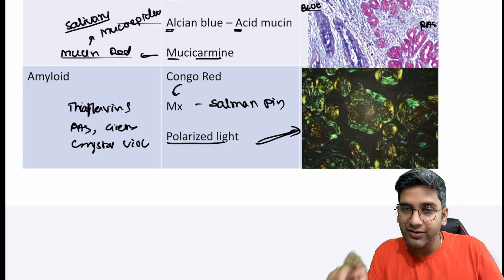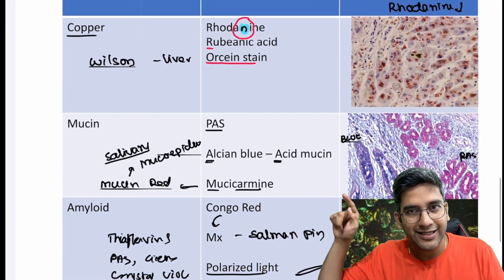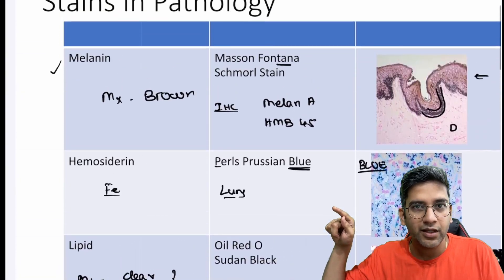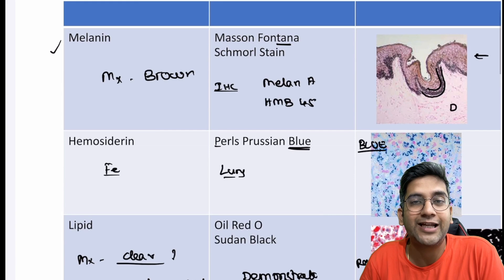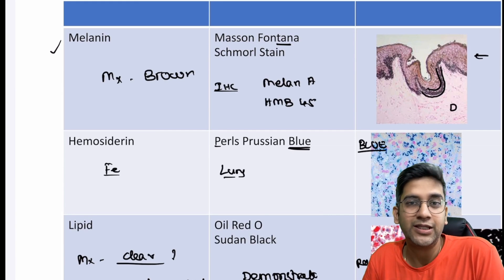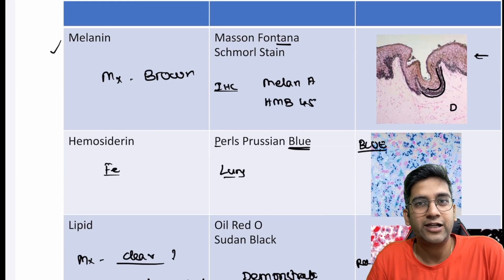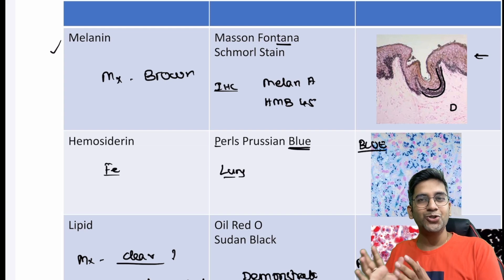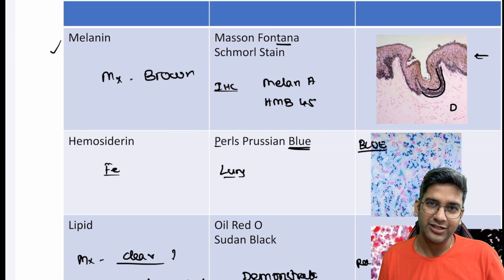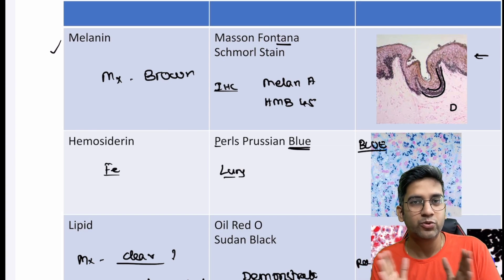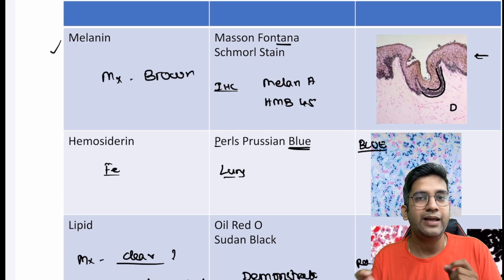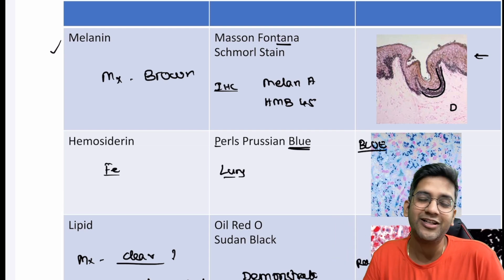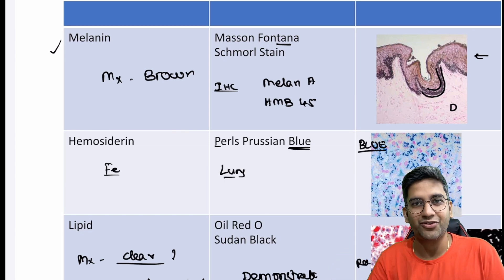I'm leaving you two questions: tell me the organism which will be staining positive on mucicarmine. And also — we did talk about a case where you have a lung biopsy with elongated fibers stained with Pearl Prussian blue in a patient working in a cement industry. Come into the comment section with your answers. If you're not subscribed to this channel, subscribe, and also follow on Instagram and Telegram — I'll put the links below. We'll be having quizzes on these topics. See you soon. Bye bye from Dr. Anjit.